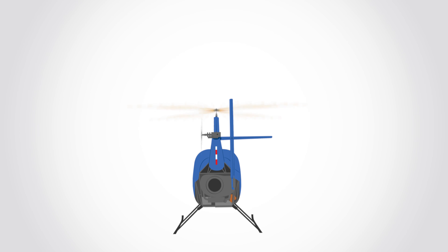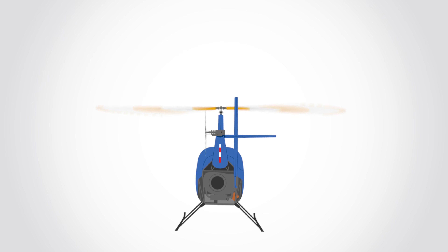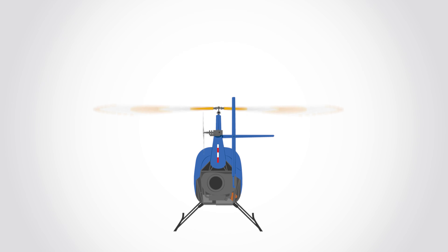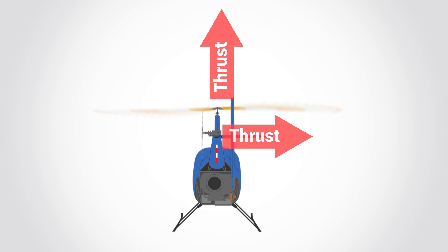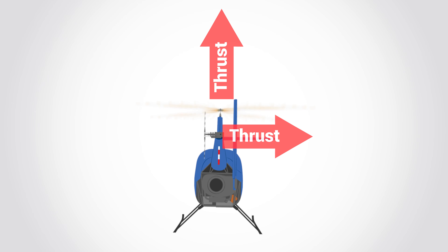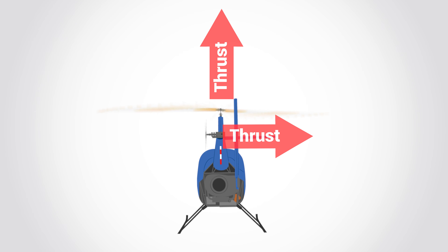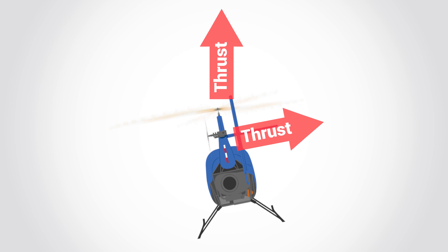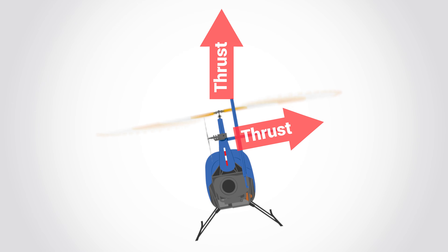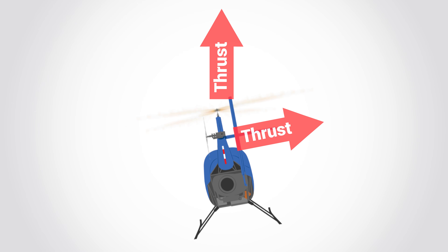Another side effect of the tail rotor is the fact that it will cause a rotational moment which results in one skid being lower than the other. In a counterclockwise rotating rotor system, the tail rotor will be creating thrust to the right side of the helicopter as seen from behind. This will cause the fuselage to be pulled slightly to the right while the main rotor system will be kept in place by the vertical component of thrust. This is referred to as the rolling tendency.